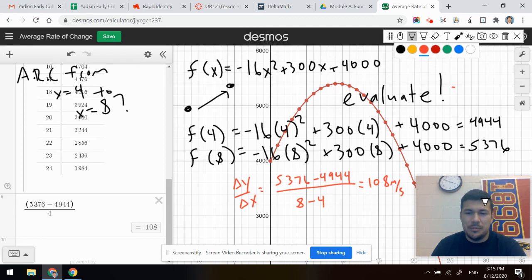And let's say that that's meters per second. So I get an average rate of change of 108, which means each second on average, that rocket was going up 108 meters. Not constantly because it's a little curve. That means maybe at some point it was going faster and then it was slowing down. But that's how you find average rate of change by evaluating.